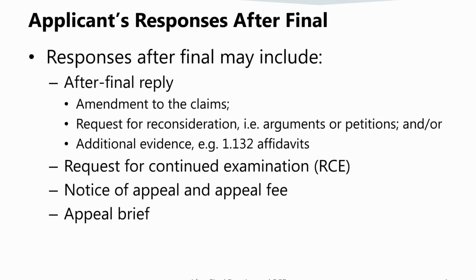Applicants can reply to a final office action in a number of different ways. Within the time period for reply presented in the final office action, applicant may submit an after-final reply which contains amendments, requests for reconsideration, and/or additional evidence used in an attempt to overcome any outstanding rejections or objections. Applicant may also choose to present the case through a request for continued examination, or submit a notice of appeal to the Patent Trial and Appeal Board.